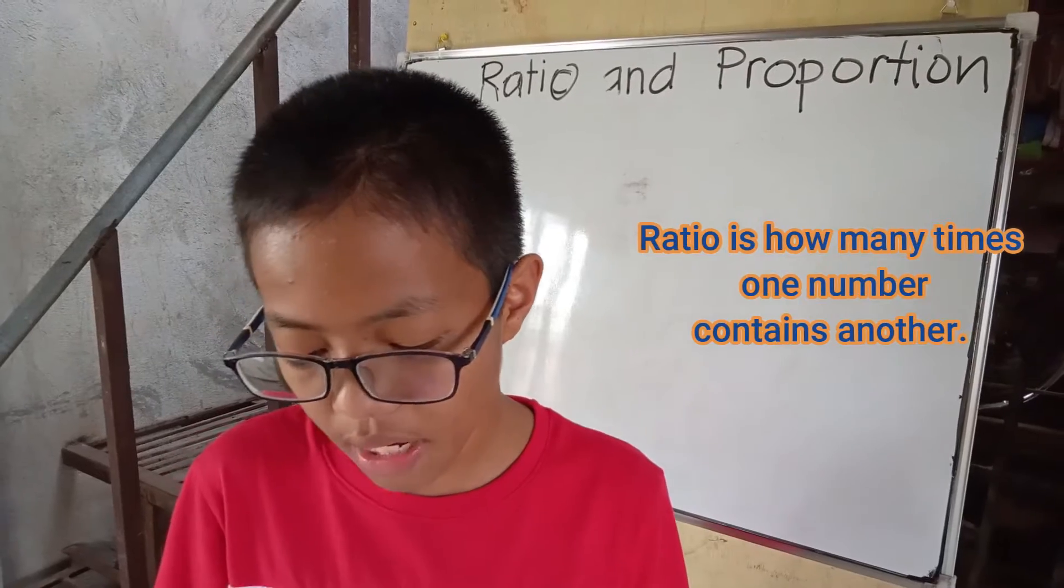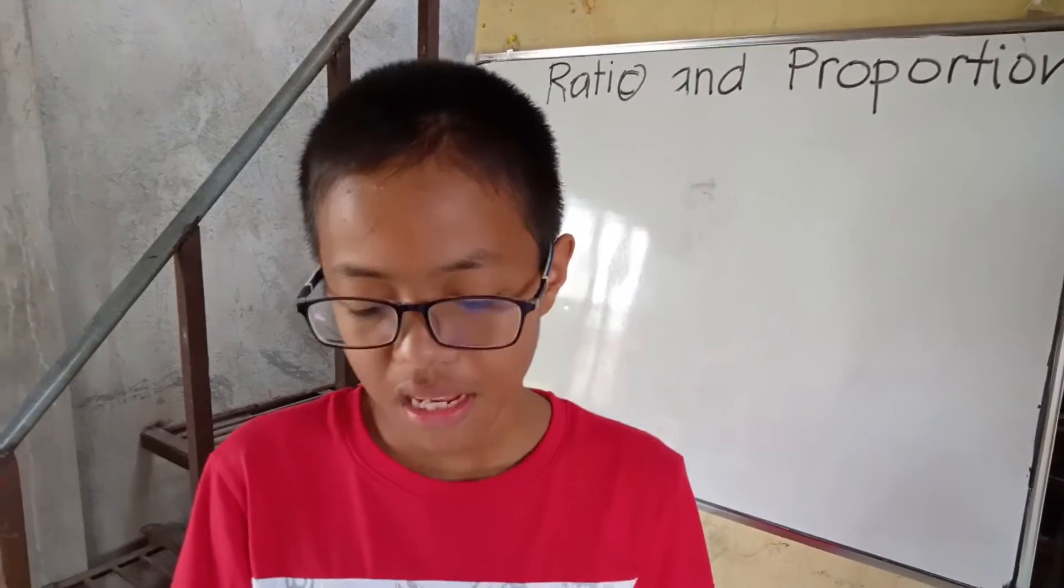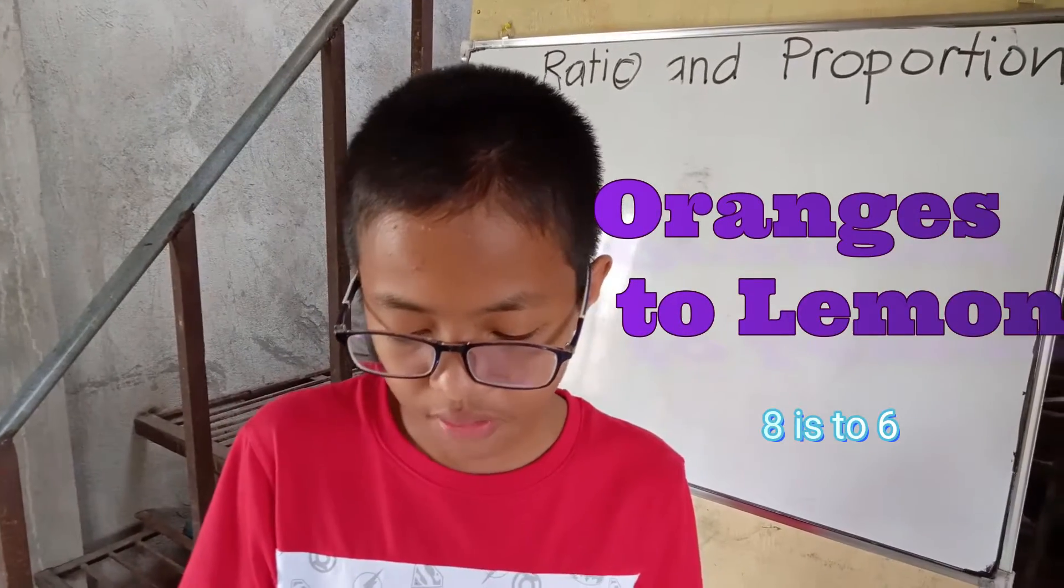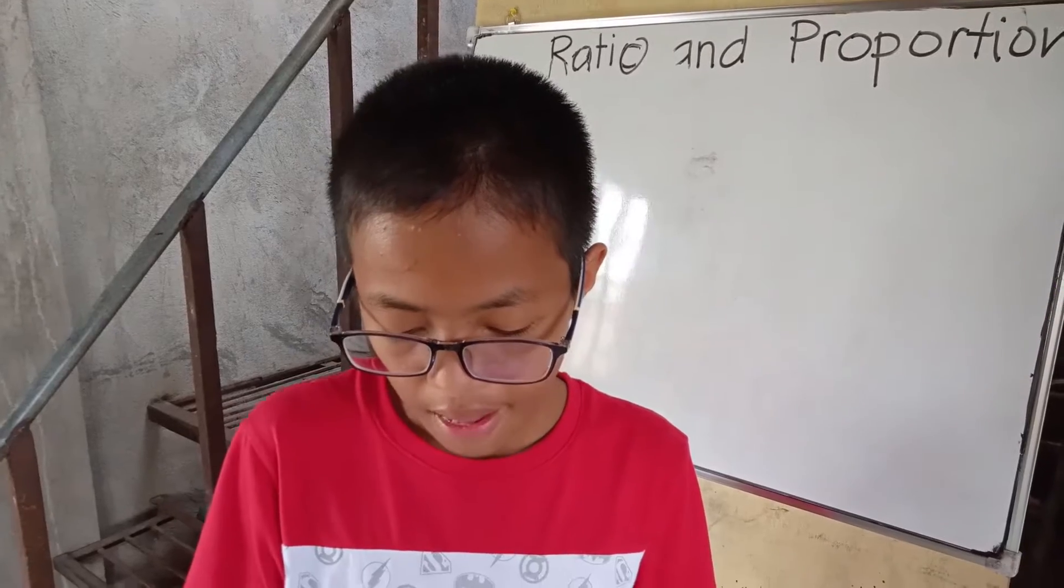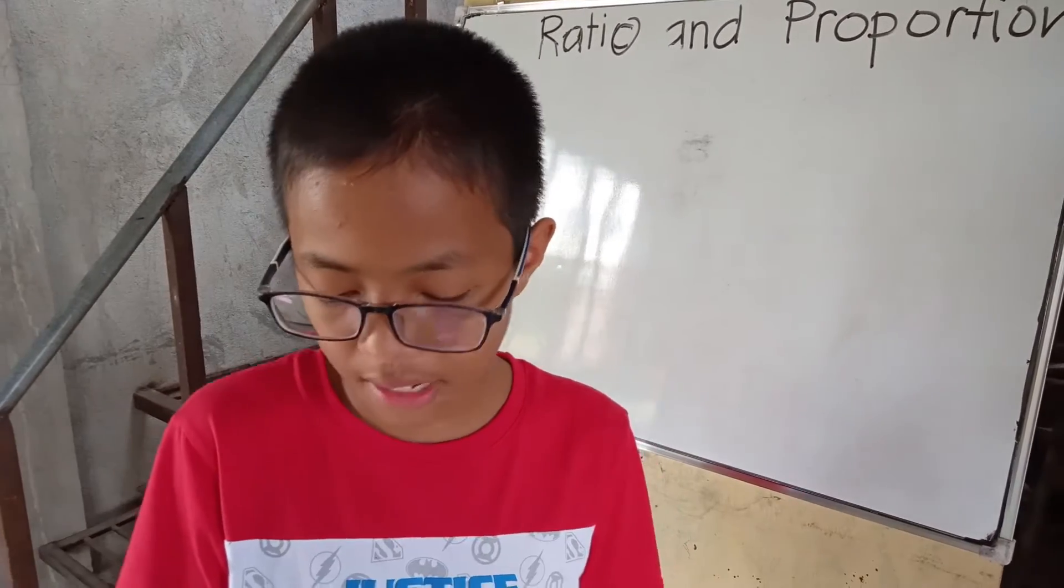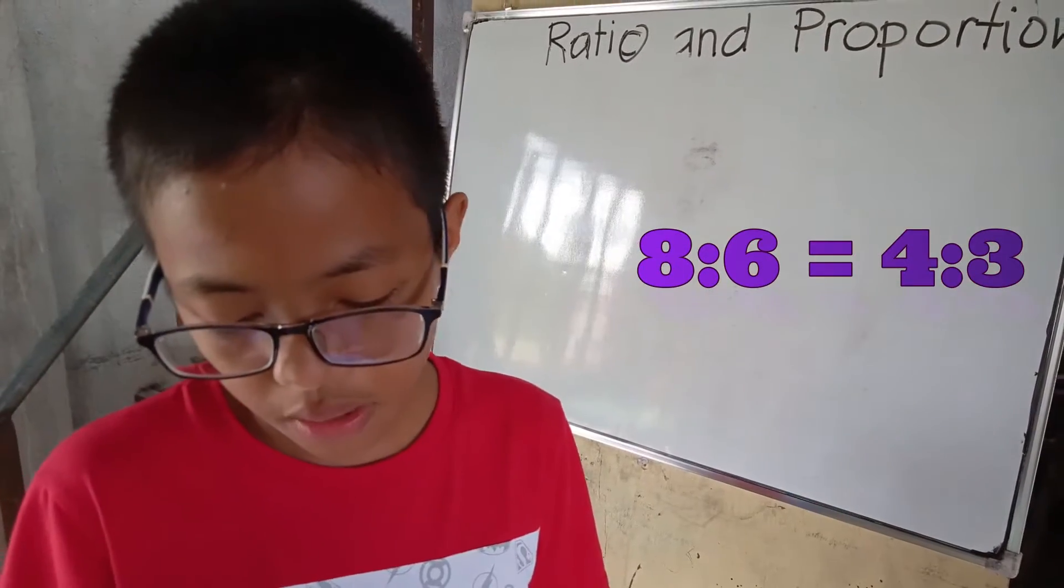So first, what is a ratio? In mathematics, a ratio indicates how many times one number contains another. For example, if there are 8 oranges and 6 lemons in a bowl of fruit, then the ratio of oranges to lemons is 8 to 6. That is, 8 is to 6, which is equivalent to the ratio of 4 is to 3.